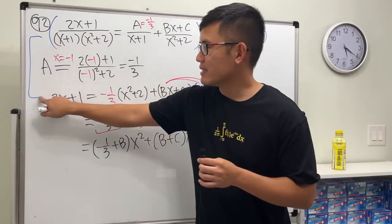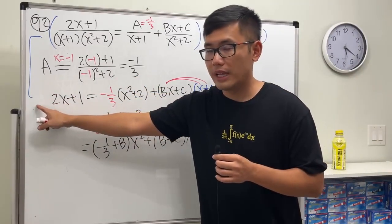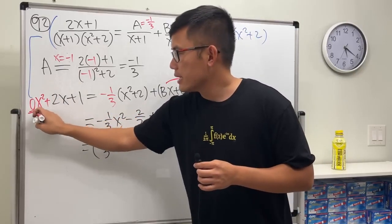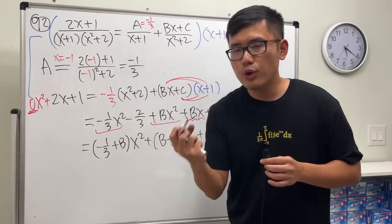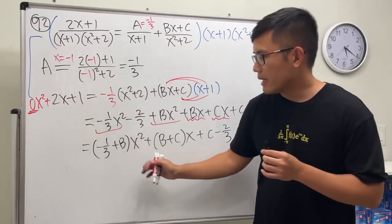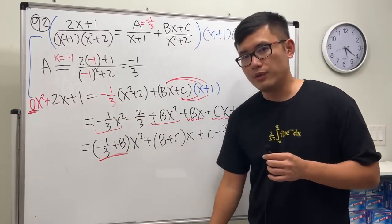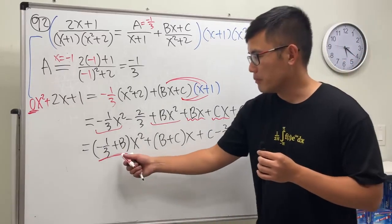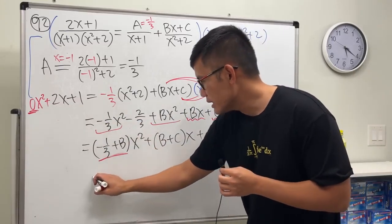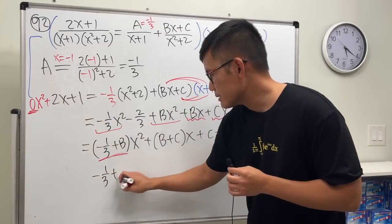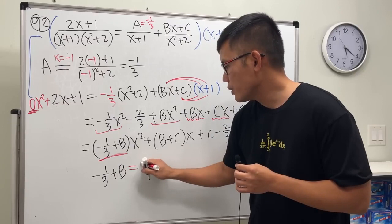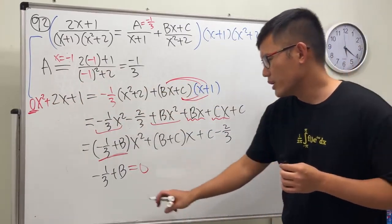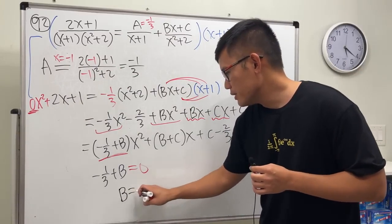Now we play a matching game. Look at the left-hand side — we do not have an x squared term, so technically that's zero x squared. But on the right-hand side, we have negative one third plus b for the coefficient of x squared. That means negative one third plus b must equal zero. So b is simply one third.